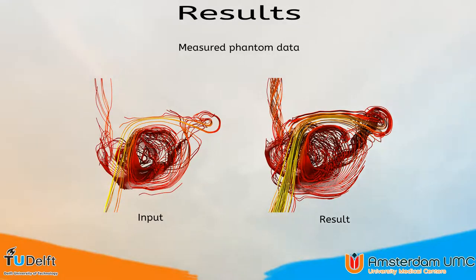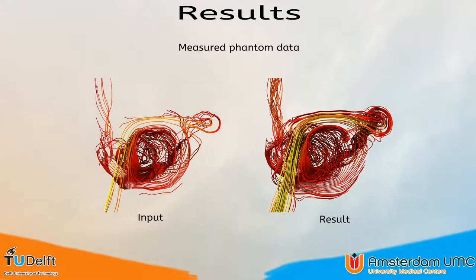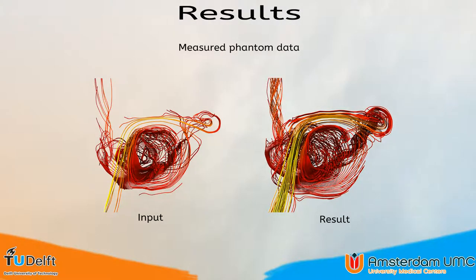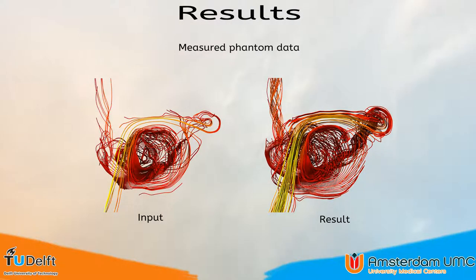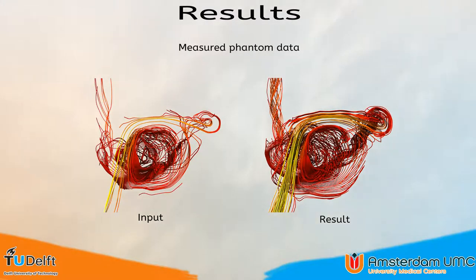For the evaluation, we use phantom data — a glass model of an aneurysm that is measured using PC-MRI. A highly specialized pump is then used to mimic the blood flow through this phantom. This highly controlled environment allows for longer measurement times without surrounding tissue that can influence the measured data. This way, the measured data has a low amount of noise and can be used as a reference. Moreover, an aneurysm has complex flows such as vortices and helical flow. A streamlined visualization of the measured data is shown on the left, and on the right a streamlined visualization after our method was applied.